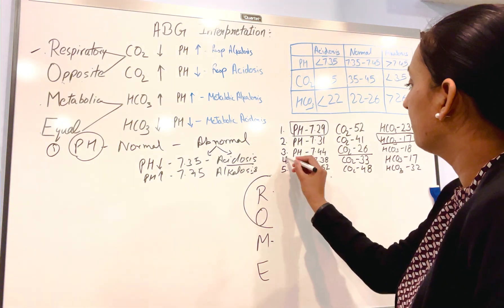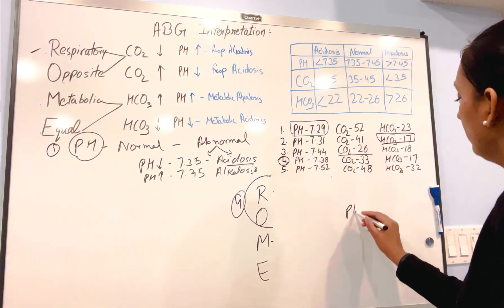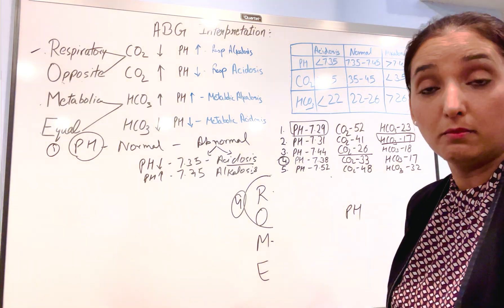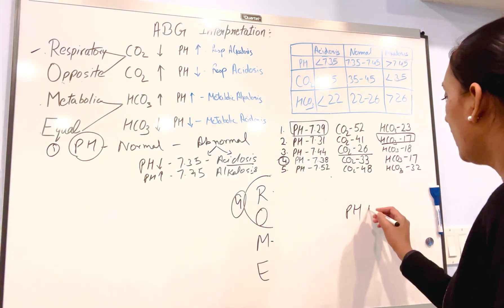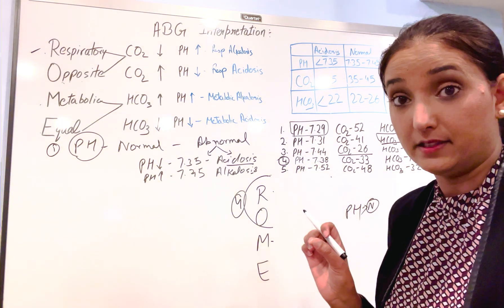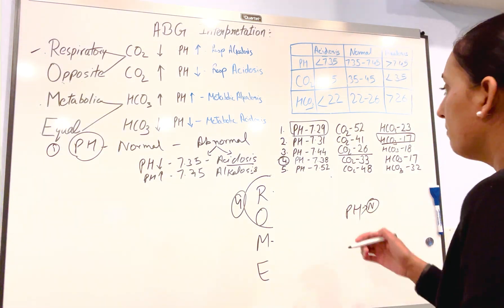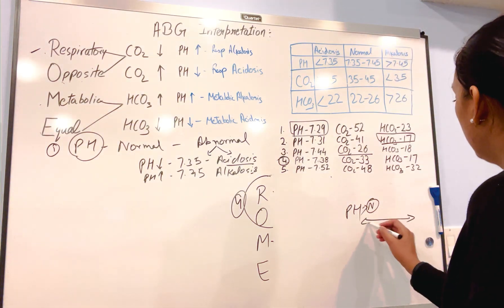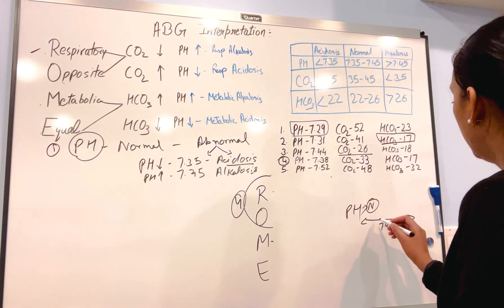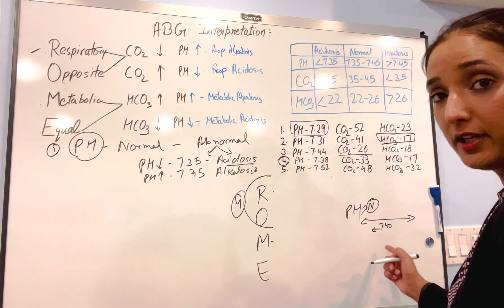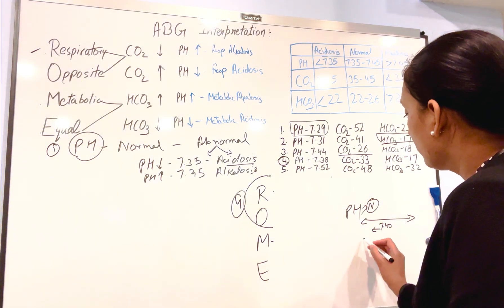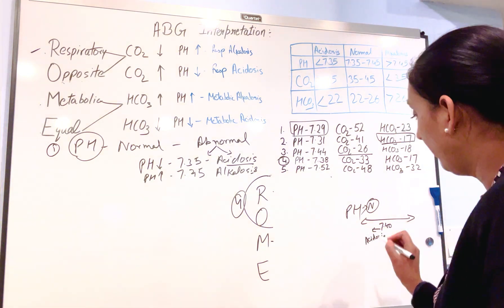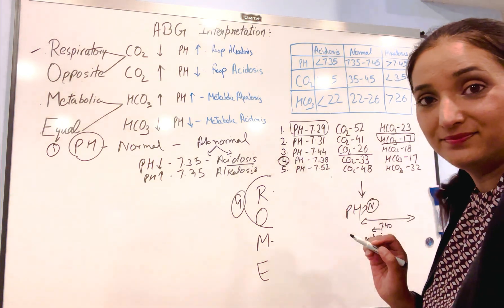Our fourth example. pH is 7.38 — it's in normal range, so your answer will be compensated. But which compensated option? If it's less than 7.40 — which is the absolute normal pH — that means it's going toward acidosis.